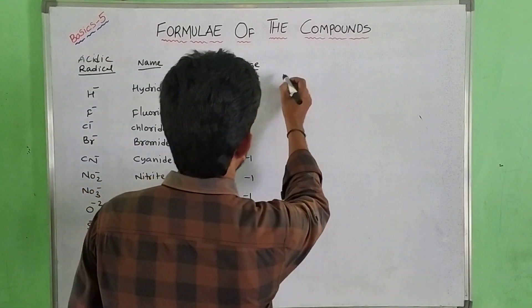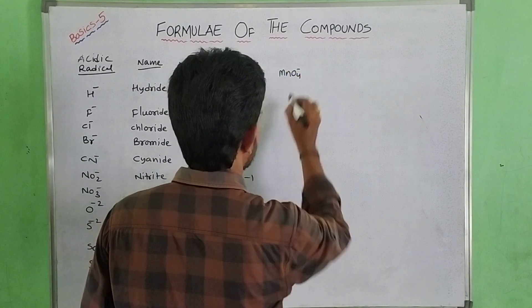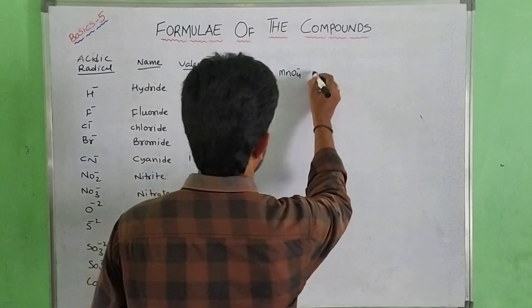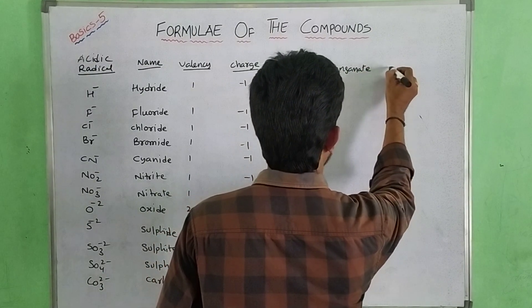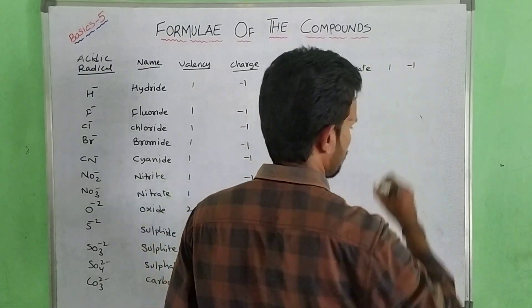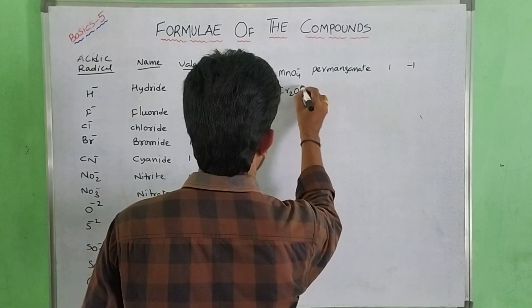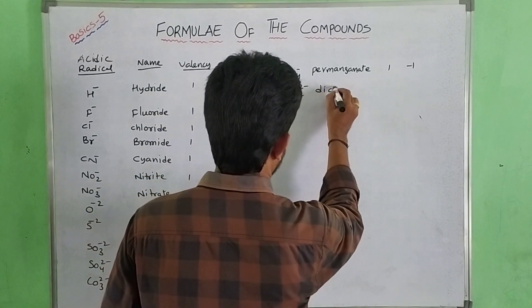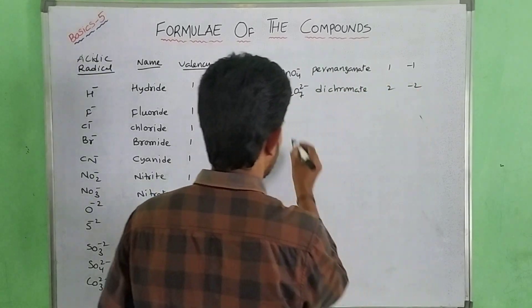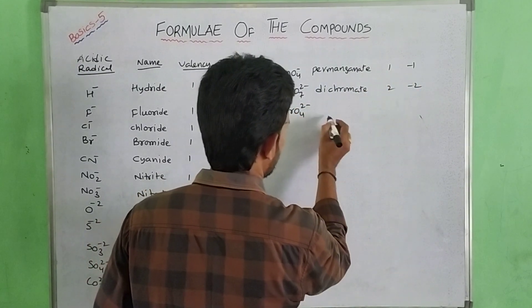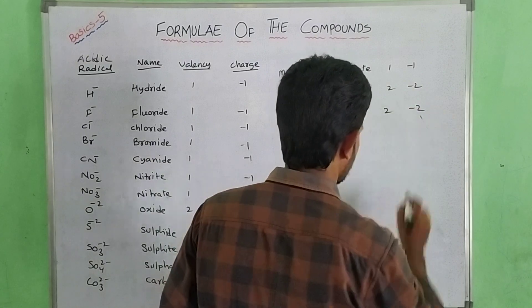Next is MnO₄ minus — permanganate. Valency 1, charge minus 1. Next is dichromate, Cr₂O₇ 2 minus. Valency 2, charge minus 2. Next is chromate, CrO₄ 2 minus — known as chromate. Valency 2, charge minus 2.